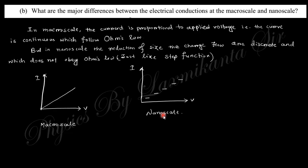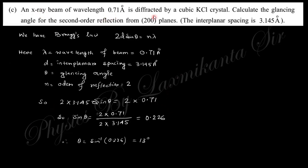Next question says: An X-ray beam of wavelength λ is diffracted by a cubic KCl crystal. Calculate the glancing angle of second order from this plane where the interplanar spacing is like that. From Bragg's law, you know 2d sin θ equals nλ. λ is the wavelength of the diffraction given here, d is the interplanar spacing, θ is the glancing angle, and n is the order of reflection. If you put this value easily, you find that the glancing angle is 30 degrees.